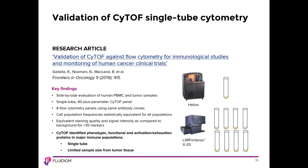Many papers over the years have compared mass and flow cytometry results side-by-side. Here's a very recent example from David Brooks' lab at Princess Margaret Hospital University Health Network in Toronto. The authors did a side-by-side evaluation of human PBMC and tumor samples analyzed by CyTOF and flow cytometry. For mass cytometry, a single-tube 40-parameter CyTOF panel was used and compared to an eight-panel flow cytometry approach using the same antibody clones. Cell population frequencies were found to be statistically equivalent for all populations, and equivalent staining quality and signal intensity was observed for more than 35 markers. CyTOF identified phenotypic, functional, and activation exhaustion proteins in major immune populations in a single tube from a limited sample size from tumor tissue.